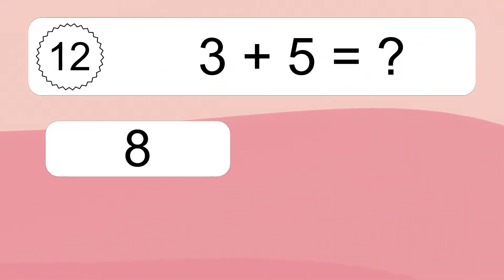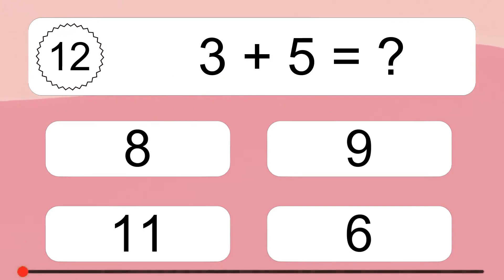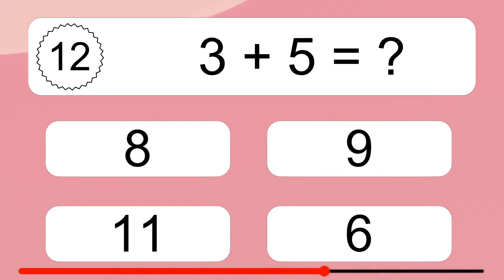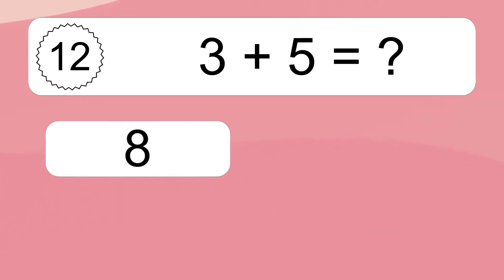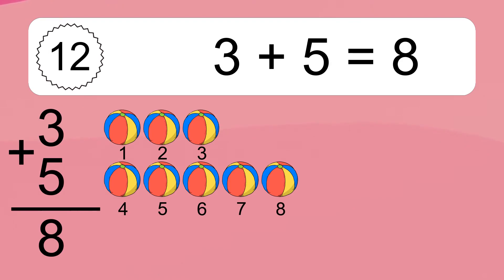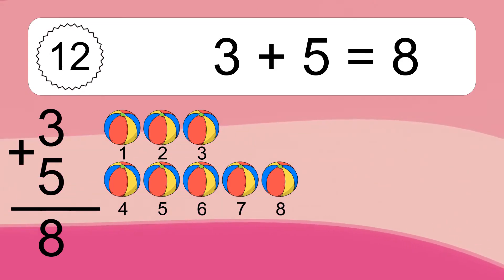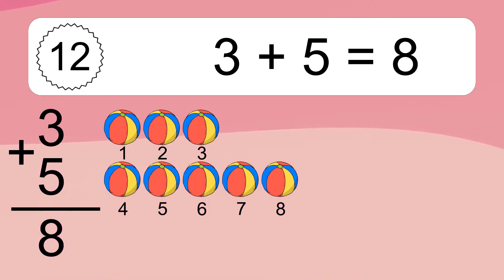3 plus 5 equals what? 3 plus 5 equals 8. Let's count it: 1, 2, 3, 4, 5, 6, 7, 8.